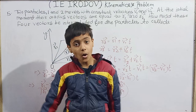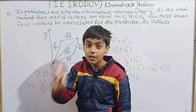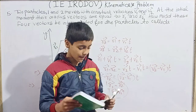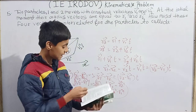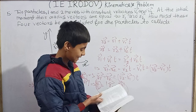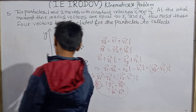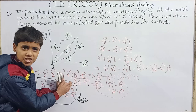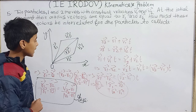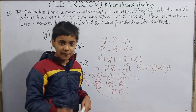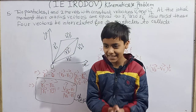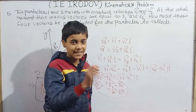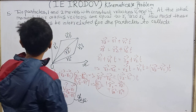That was a very easy and elegant question. If this relationship holds between the four vectors — that the unit vector of (r₁ minus r₂) equals the unit vector of (v₂ minus v₁) — then the two particles will surely collide. This is the required interrelation between the position vectors and velocity vectors for collision to occur. This completes question 5.